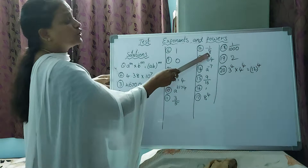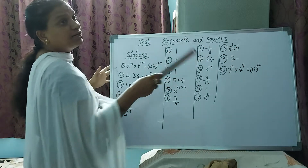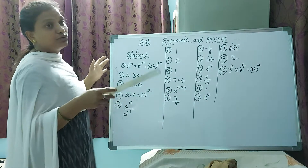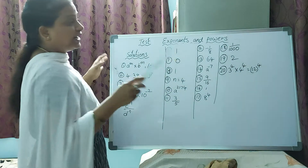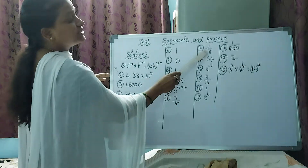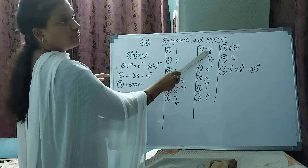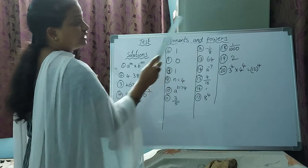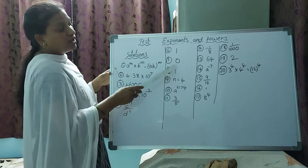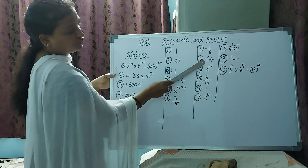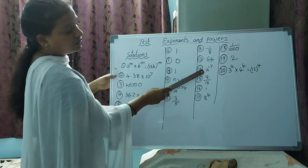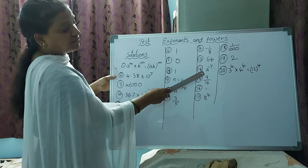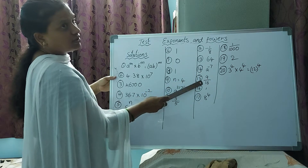Next: (1/2) whole cube minus (−1/2) whole cube. Write 1/2 three times: 2 × 2 × 2 = 8. Then minus × minus × minus: minus × minus = plus, plus × minus = minus. You will get the next answer — I think 64.